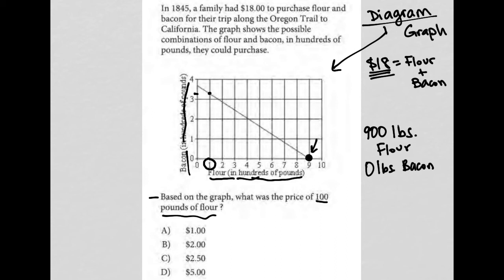At this point, you're not buying any bacon, only flour. So if they only had $18, they'd be able to spend those $18 on 900 pounds of flour. If that's the case, that means $2 per 100 pounds is the price of the flour.